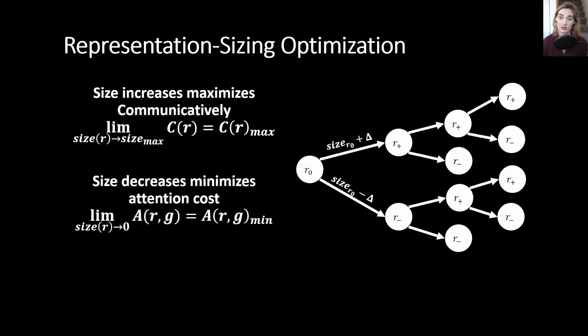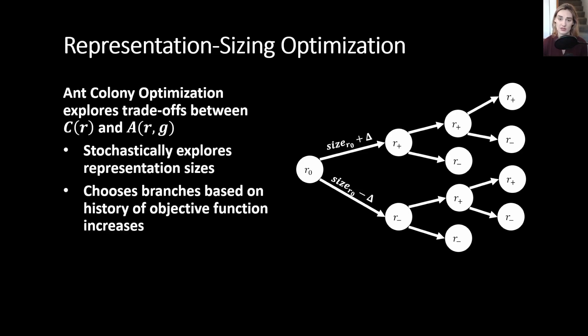However, having more large representations is going to clutter the map, making it difficult to read overall. So as we increase size, we also expect the attention cost to increase. Ant colony optimization helps us explore this trade-off by stochastically exploring different representation sizes. It chooses which branch to take of adjusting these different representations, either increasing the size or decreasing the size, based off of the prior history of whether or not that increase or decrease has improved the objective function overall.